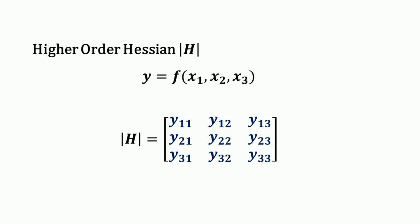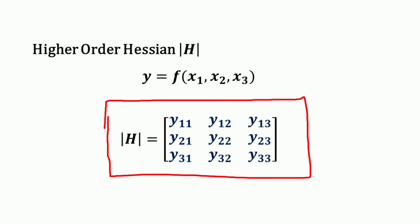The third order Hessian is: y11, y12, y13; y21, y22, y23; y31, y32, and y33 — where the elements are the various second order partial derivatives of y.